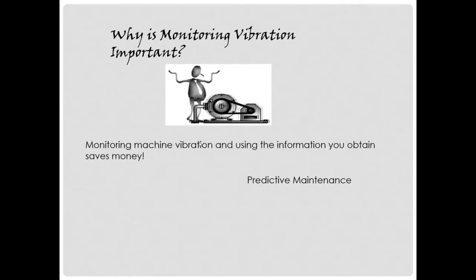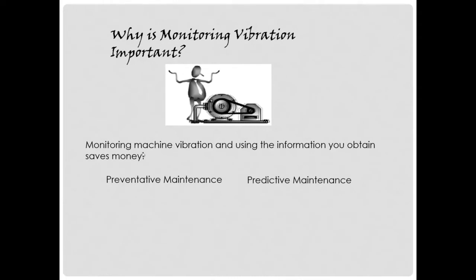We use vibration monitoring for a couple of different things. First, monitoring machine vibration and using that information can save us money — we can detect the progressive wear of a machine through vibration monitoring. Lots of times we get audible clues that equipment is starting to fail. Most of us become relatively familiar with our workplaces and can actually listen and hear changes in the way machines are operating. That's usually the first clue that something is starting to go on us. To measure what is going on, we use vibration monitoring for preventative and predictive maintenance.